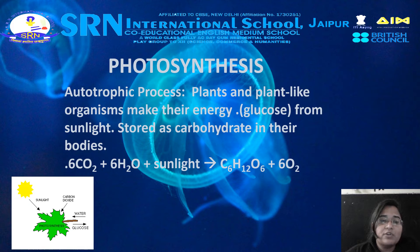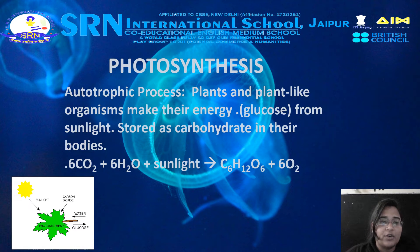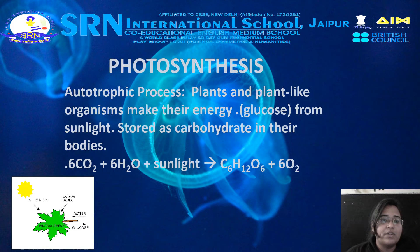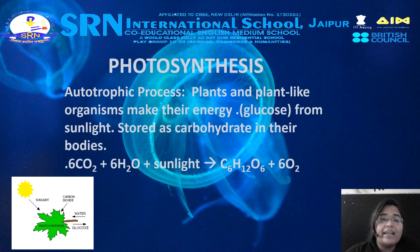In most cases, oxygen is also released as a waste product. Most plants, algae, and cyanobacteria perform photosynthesis. Such organisms are called photoautotrophs. Photosynthesis is largely responsible for producing and maintaining the oxygen content of the Earth's atmosphere and supplies most of the energy necessary for life on Earth. Although photosynthesis is performed differently by different species, the process always begins when energy from light is absorbed by proteins called reaction centers that contain green chlorophyll and other pigments such as xanthophyll and carotenoids. These proteins are held inside organelles called chloroplasts, which are most abundant in leaf cells, while in bacteria they are embedded in the plasma membrane.